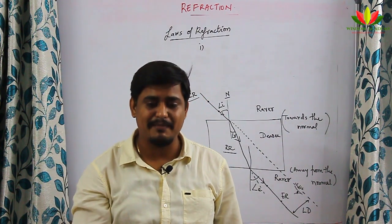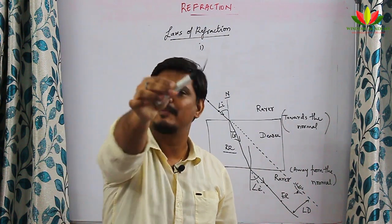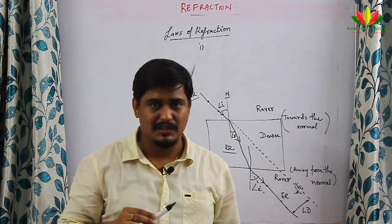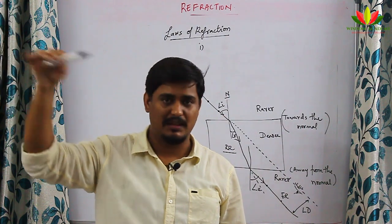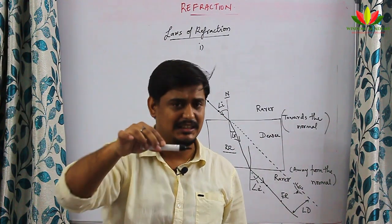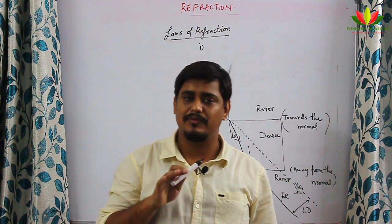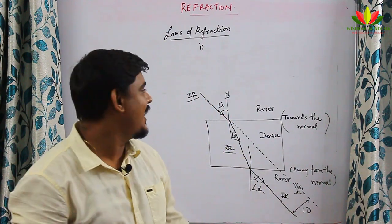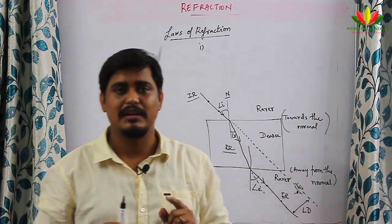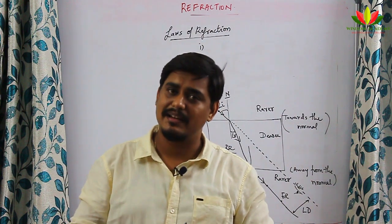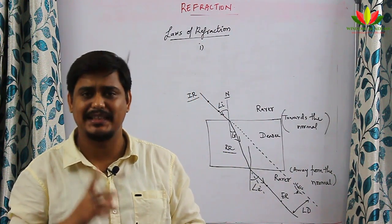The first law of refraction is similar to the first law of reflection: the incident ray, refracted ray, and the normal all lie in the same plane. This means if light comes in one direction, after bending it will remain in the same plane — it cannot come in one plane and go out in another.